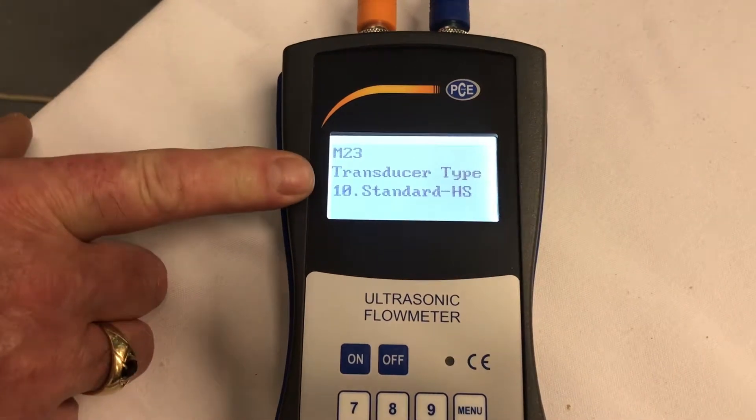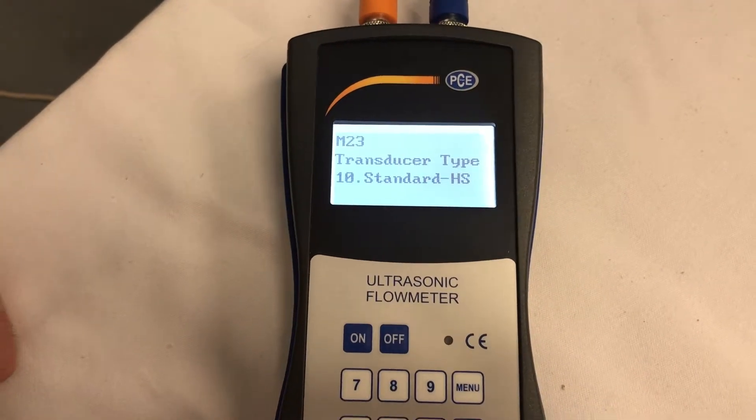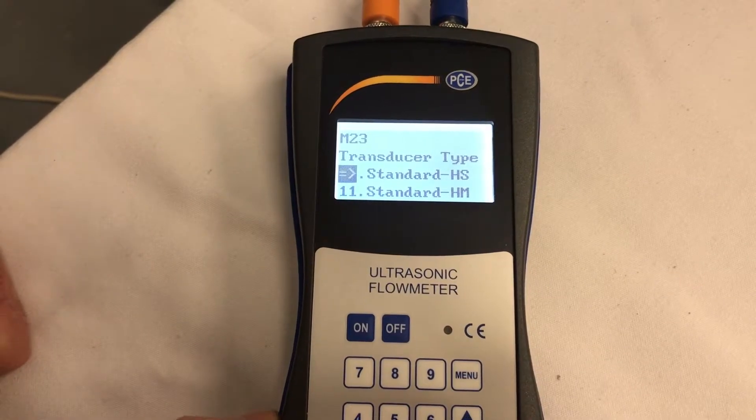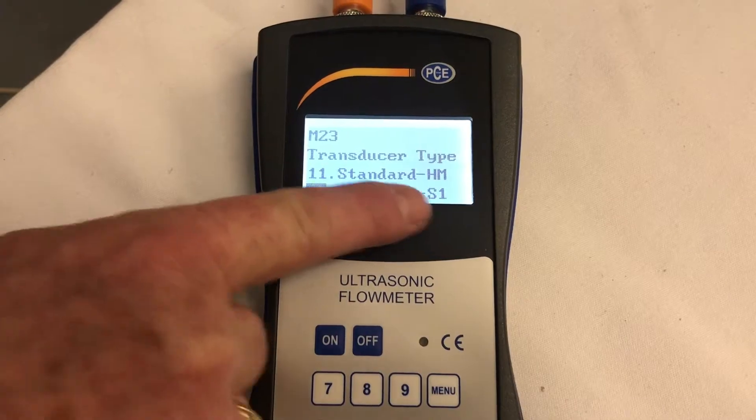Now we're going to select our transducers type. So we go, enter. And we go down arrow until we get to S-1. Standard S-1. Enter.